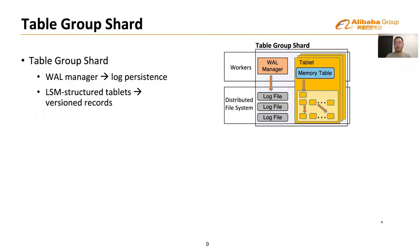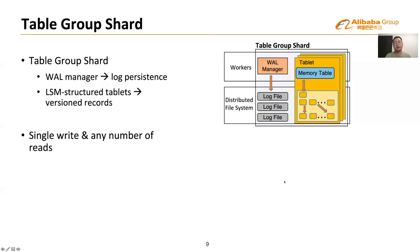Looking more closely at table group shards: as the basic unit of data management in Hologres, each table group shard consists of a write-ahead log manager and a set of tablets. To decouple reads and writes, tablets are uniformly managed as LSM trees where writes are versioned. Each tablet has a memory table in the worker node and a set of immutable shard files persisted in the distributed file system. Because reads and writes are decoupled, a table group shard can have one writer and any number of concurrent readers, allowing non-blocking query execution during high-throughput data ingestion.